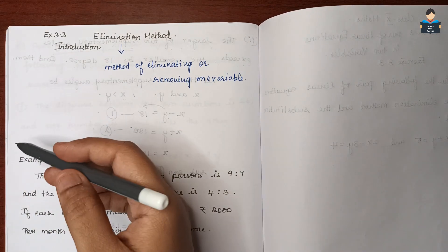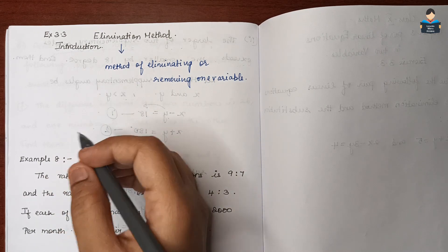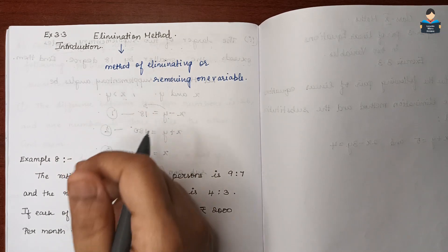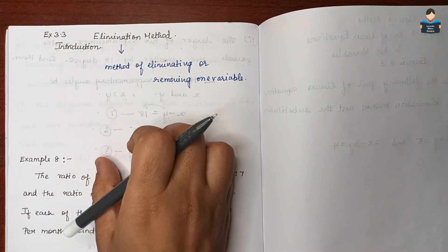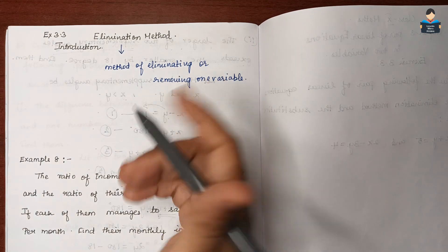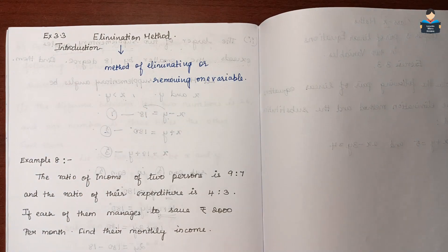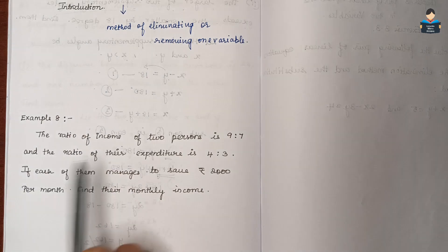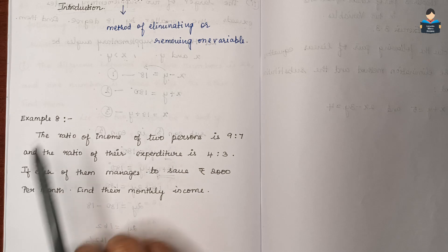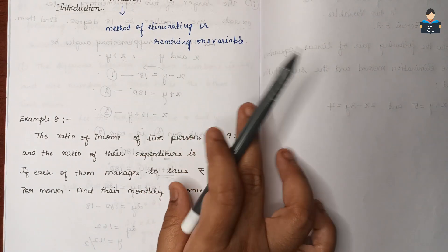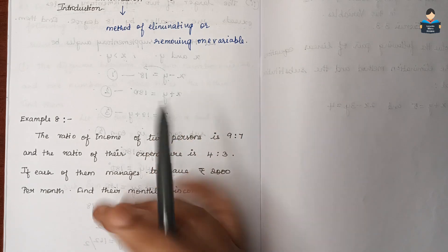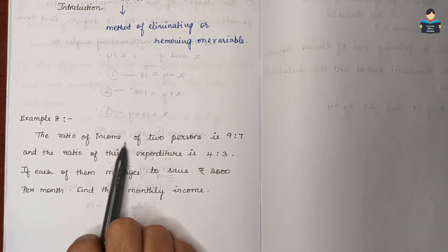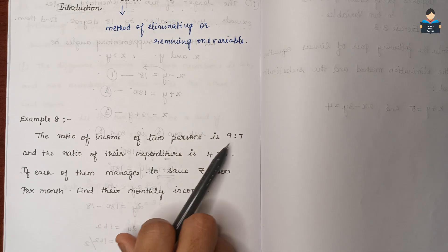The elimination method is simpler compared to the substitution method. In the substitution method we find out one equation and substitute into the other. The elimination method is applied here — the equation ratio is 9 is to 7.